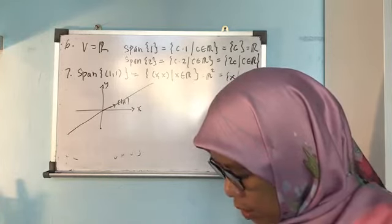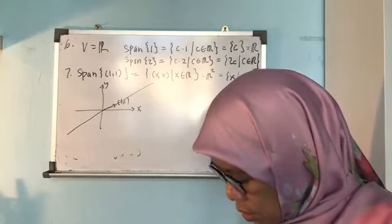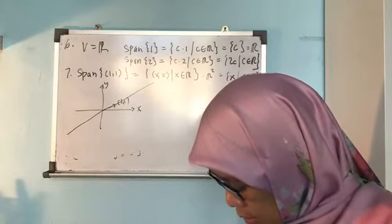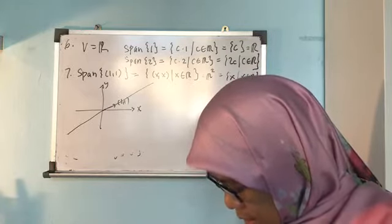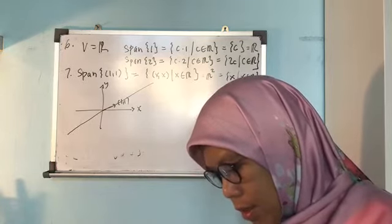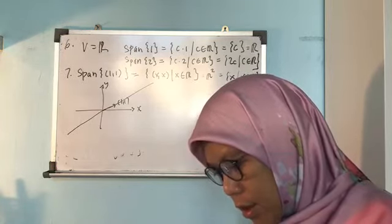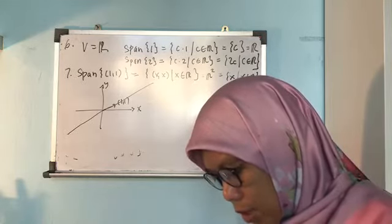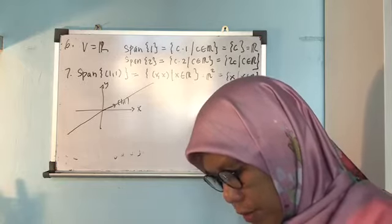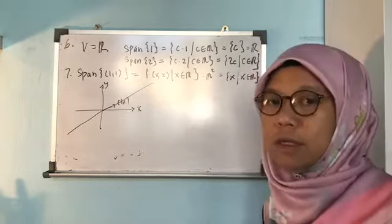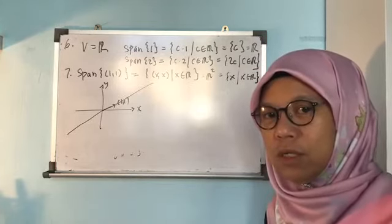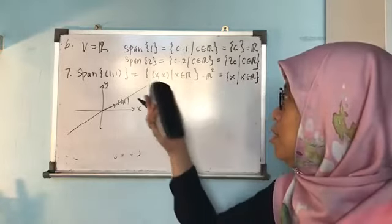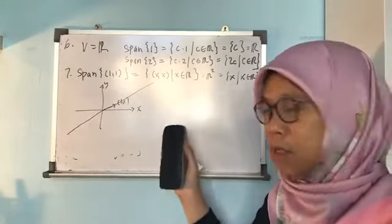Theorem 3.1 shows how to prove a set is a subspace — using the zero vector, closure under addition, and closure under scalar multiplication. In this section there are many different types of questions about spanning, but they all use the same basic idea of linear combination.